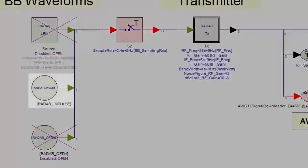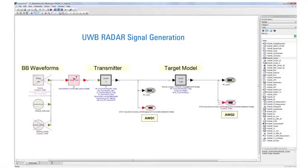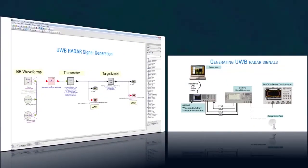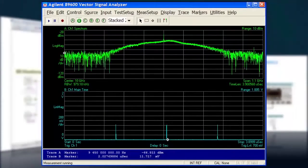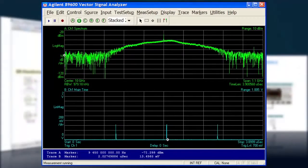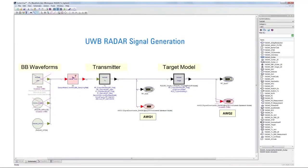First, we will create an impulse UWB signal. A low-cost impulse UWB waveform is often used for through-wall detection. In the SystemVue schematic, the impulse source is activated to create the signal with a 1 GHz bandwidth, a 2 nanosecond pulse width, and a 10 microsecond repetition interval. Here is the spectrum and time-domain waveform of the signal as viewed on the 90000 X Series oscilloscope with the VSA software.